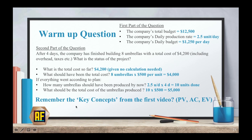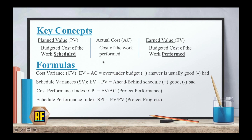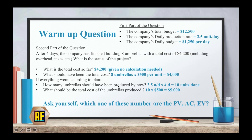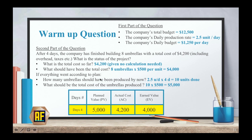This is what should have occurred. Remember the key concepts from the first video: PV, AC, and EV. Here is the slide from the first video giving you each concept and the formulas. Which of these numbers are the PV, AC, and EV? As you can see in this table, we have days, PV, AC, and EV. At day number 4, our PV — the total planned cost of umbrellas — is $5,000. Our AC, the total cost we actually paid, is $4,200. And our Earned Value is $4,000, which is what should have been the total cost of the work completed.